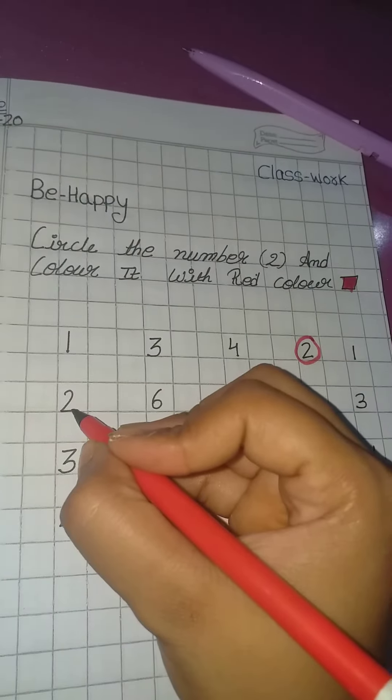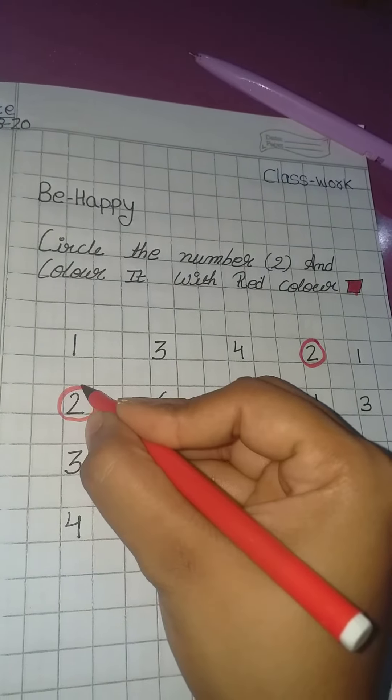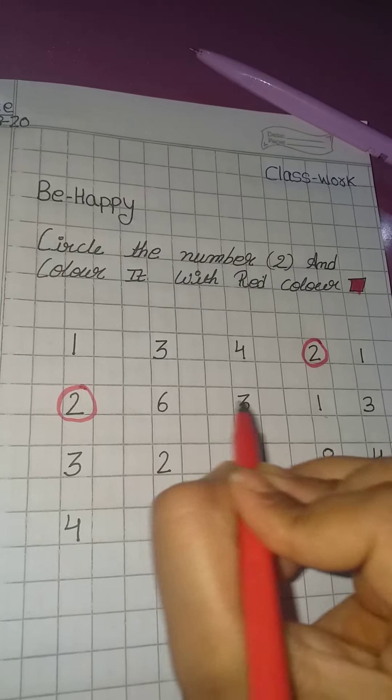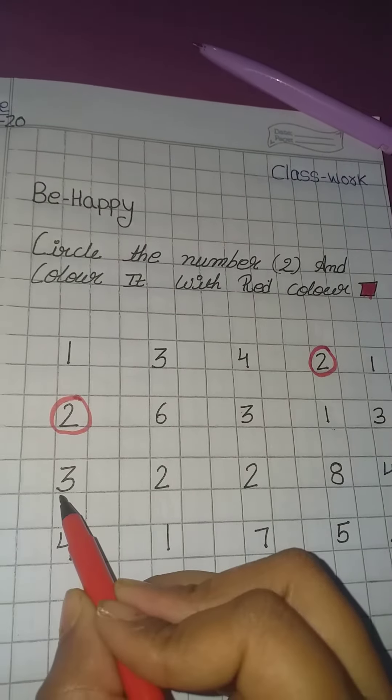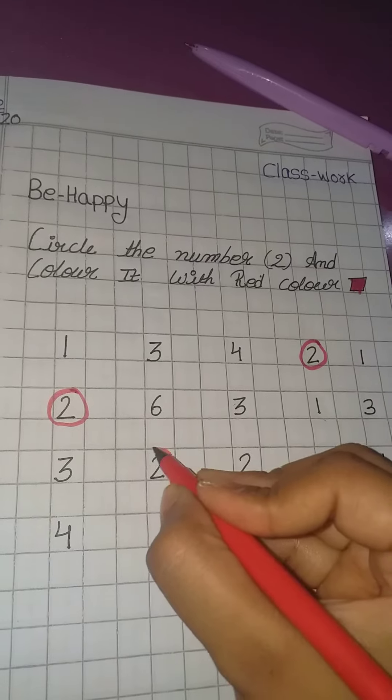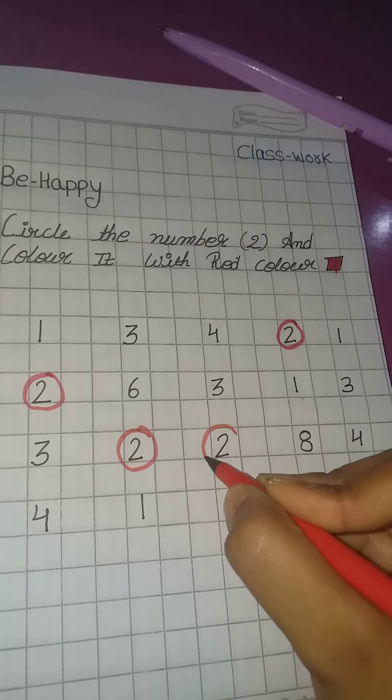1. Yeh kuan sa karna hai? Number 2. 6, 3, 3, 1, 3. Phir se 3, 2. 2 ko circle karna hai. Phir next bhi 2 hai. 2 ko circle karna hai.